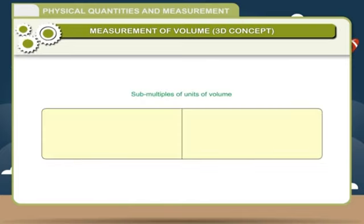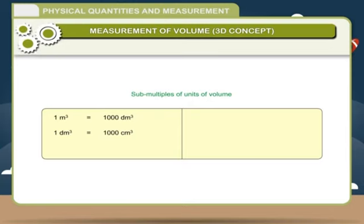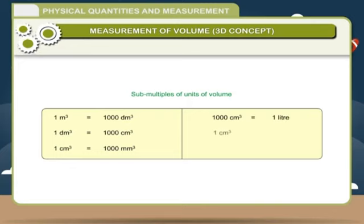Submultiples of units of volume: 1 cubic meter is equal to 1,000 cubic decimeters. 1 cubic decimeter is equal to 1,000 cubic centimeters. 1 cubic centimeter is equal to 1,000 cubic millimeters. 1,000 cubic centimeters is equal to 1 liter. 1 cubic centimeter is equal to 1 milliliter. 1 cubic meter is equal to 1,000 liters.